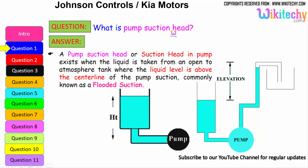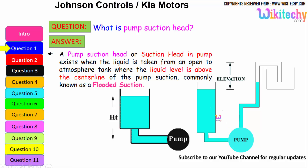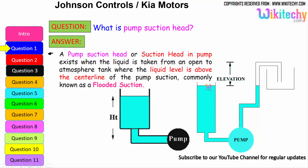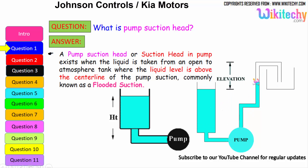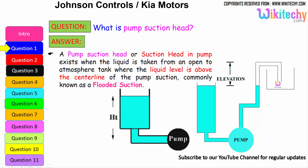What is a pump suction head? A pump suction head exists when the liquid is taken from an open atmospheric tank where the liquid level is above the center line of the pump suction, commonly known as flooded suction. Automatically, the pump suction will try to pick the water or any liquid from one area to another based on atmospheric pressure.